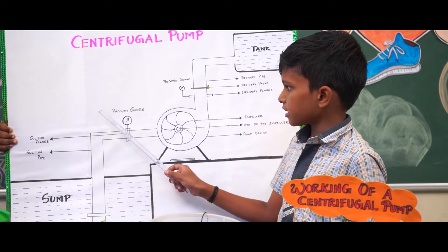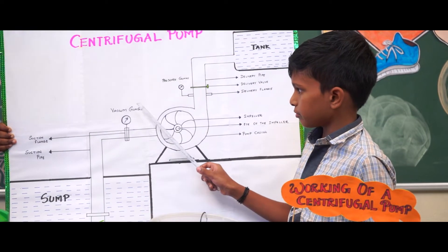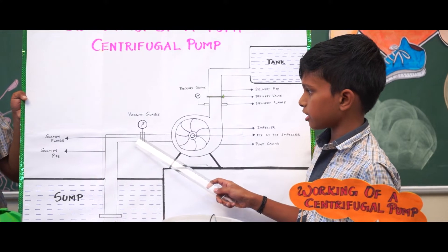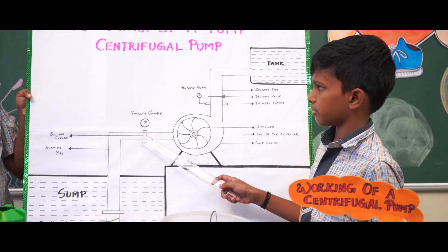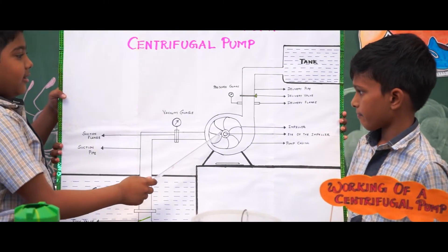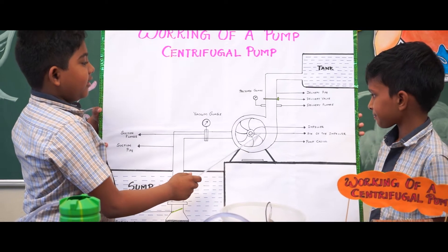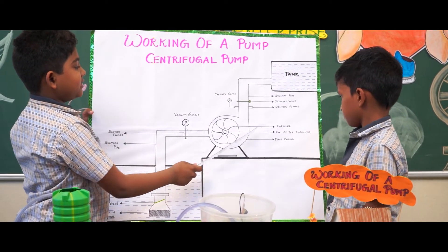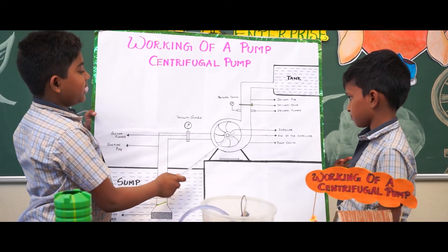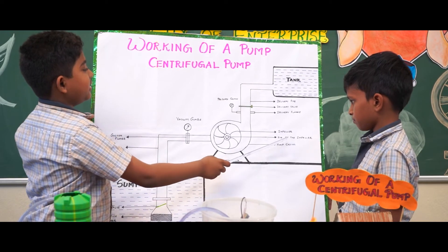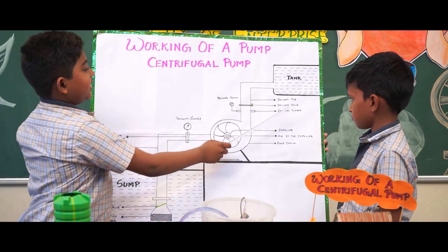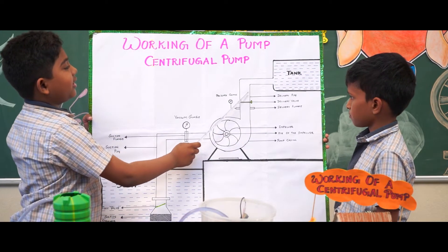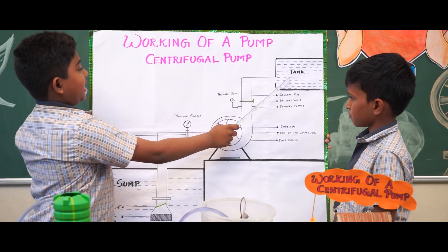The suction plate and the vacuum gauge — the purpose of the vacuum gauge is to measure the pressure. Then we have a pump casing with an impeller. The center of the impeller is called the eye of the impeller. Then we have the delivery flange, delivery valve, and finally the delivery pipe. The water reaches the overhead tank.